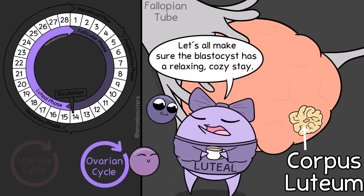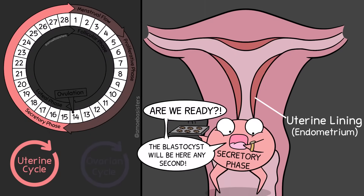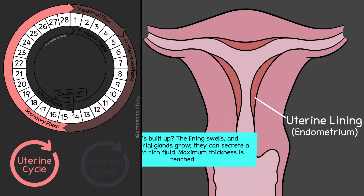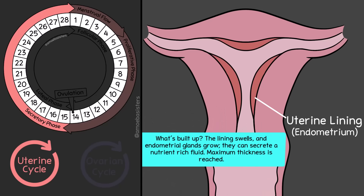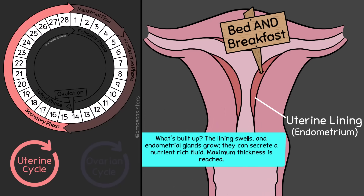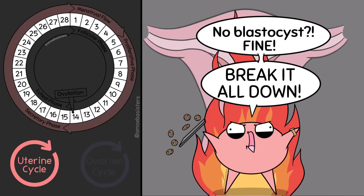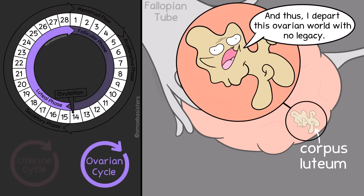Let's look at the uterine cycle now. It also will enter a new phase after ovulation: the secretory phase. All this endometrial tissue, this uterine lining, is continuing to build up and prepare for potential implantation of a blastocyst. If no blastocyst implants in the uterus, ultimately the corpus luteum will break down and the endometrium will start to degenerate. Day one of a new cycle will be when bleeding occurs again.